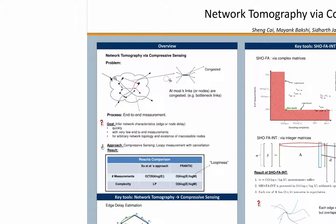The problem is the following. We are given a network of point-to-point links, and we want to figure out where the congested links or nodes in this network are and what the value of delays for these congested nodes or links are. To figure these things out, we are allowed to make end-to-end measurements — that is, we are allowed to send test packets from one probe node to another. We can perform this operation many times using many probe nodes, and based on the collection of total times required for these test packets, we want to figure out the delay characteristics for the entire network as quickly as possible.